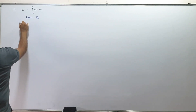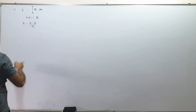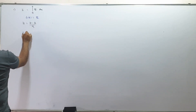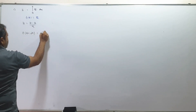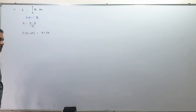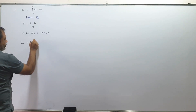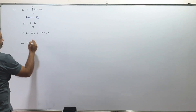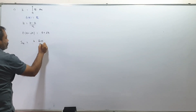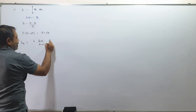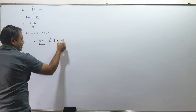So first, h is equal to (b minus a) upon n. Then f of a plus i·h. S_n is equal to h. Limit as h tends to 0, sigma i equals 1 to n, f of a plus i·h.